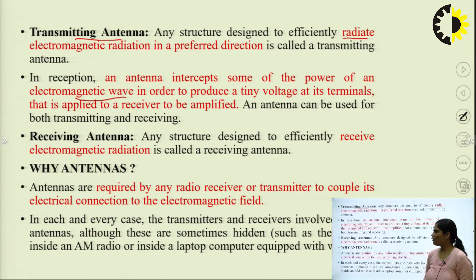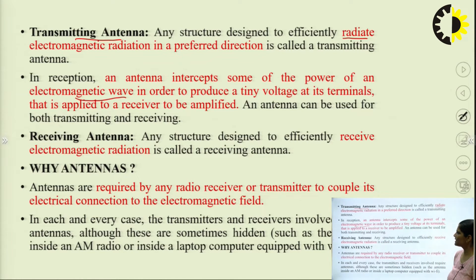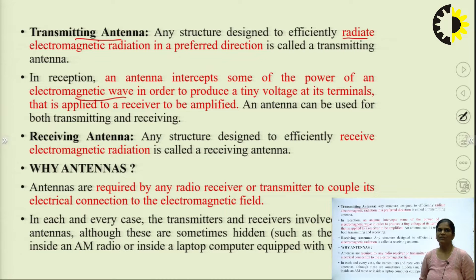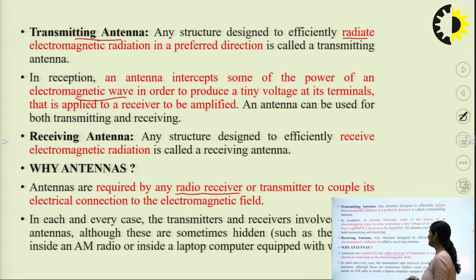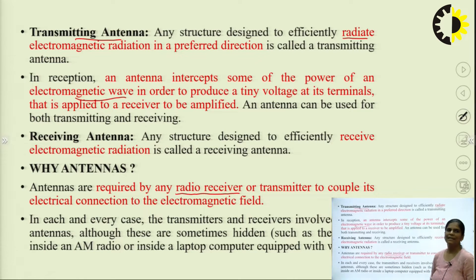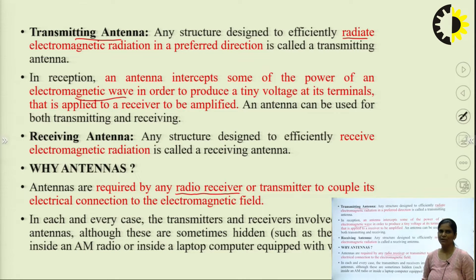What do you mean by receiving antenna? Vice versa of the transmitting antenna — any structure designed to efficiently receive electromagnetic radiation is known as a receiving antenna. These antennas are required by any radio receiver or transmitter to couple its electrical connection to the electromagnetic field.